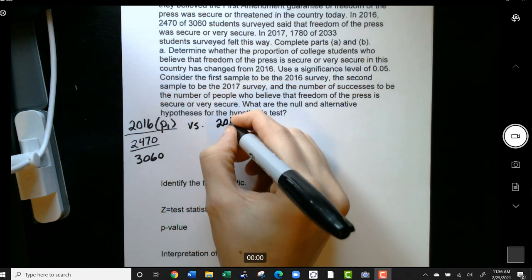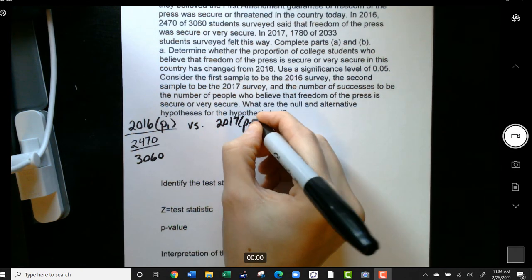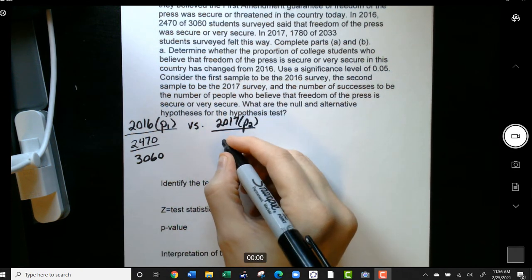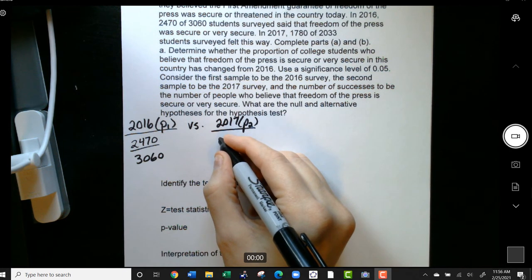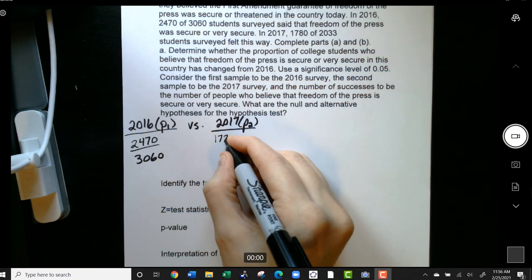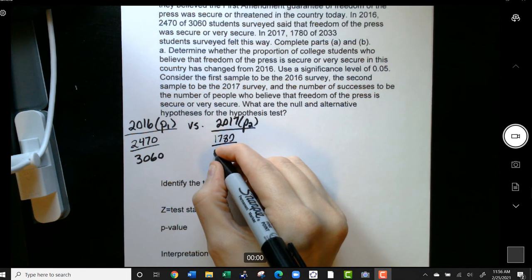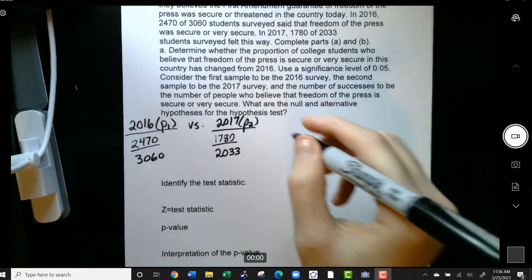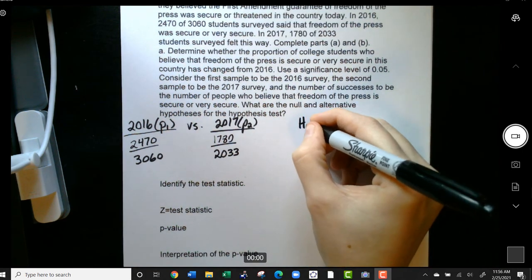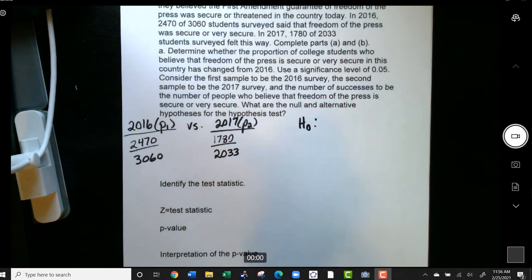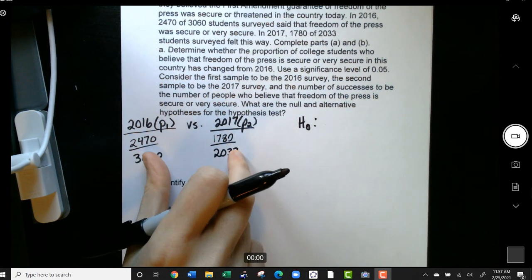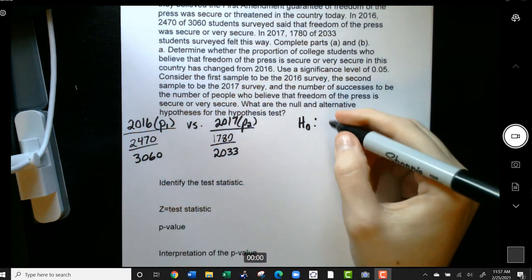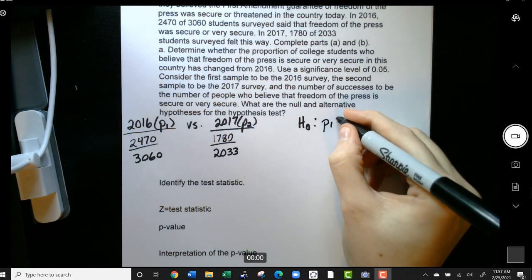Versus in 2017, which I'm going to call Population 2, we had 1,780 out of 2,033. Now, here's what the null and alternative hypotheses are. Our null hypothesis, when we're looking at two populations instead of one, is we're always going to assume that the populations are the same. So we're going to assume that P1 equals P2.